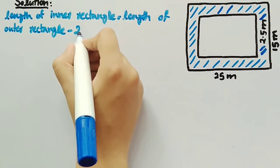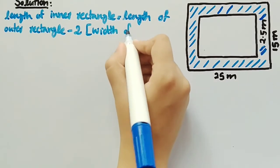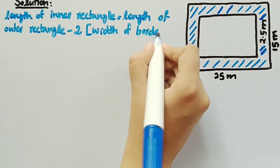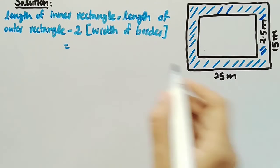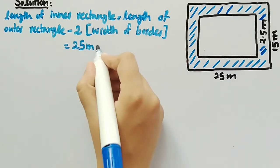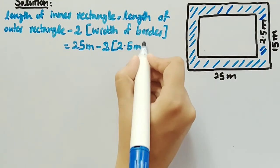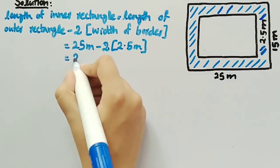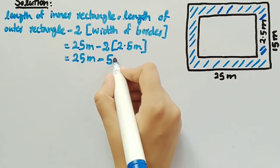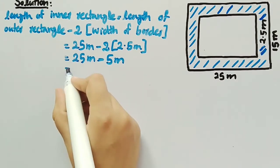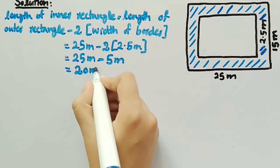By substituting the values, length of outer rectangle is 25 meters minus 2 times width of border which is 2.5 meters, which equals 25 meters minus 5 meters. So we get length of inner rectangle equal to 20 meters.